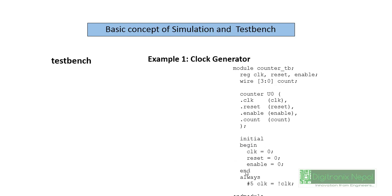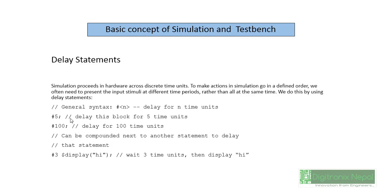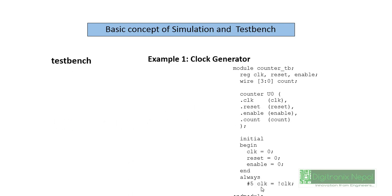We have an initial block with begin and end, and in between we have initialized some values for the inputs: clock, reset, and enable. These inputs are initialized to zero value. We also have an always block with `#5` — the hash-5 is a 5-nanosecond delay. Clock is assigned as the inverted clock, so clock toggles. We can have a semicolon after a single delay line, so we can use our statement on that line.